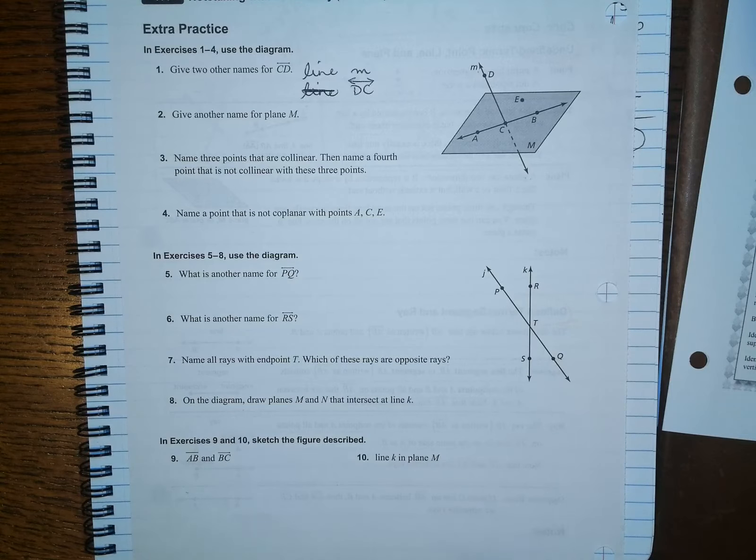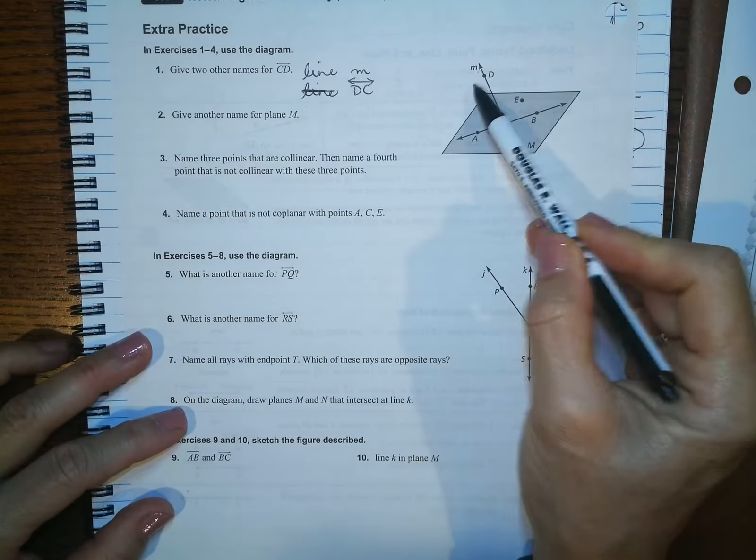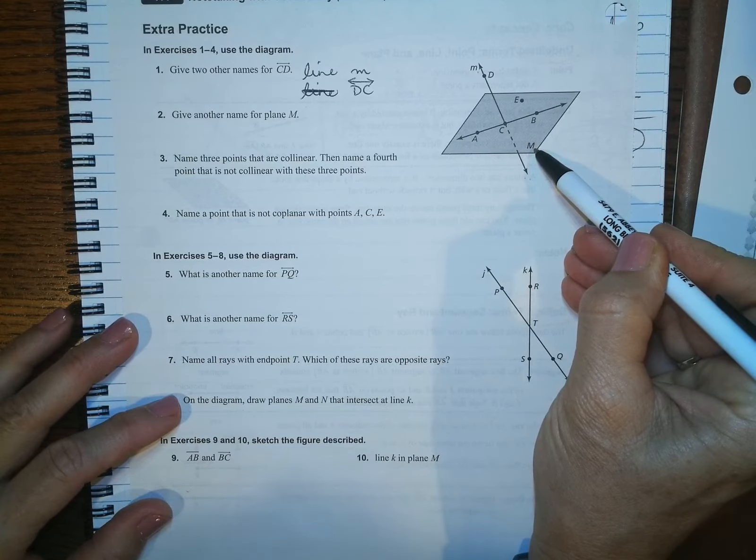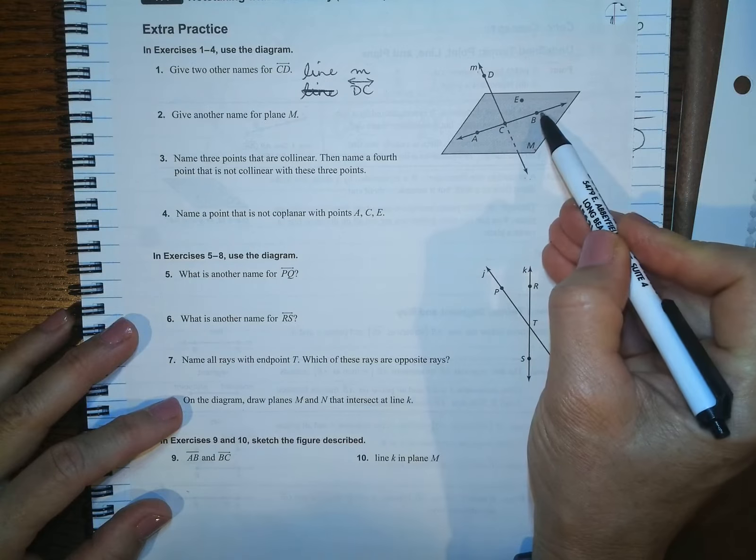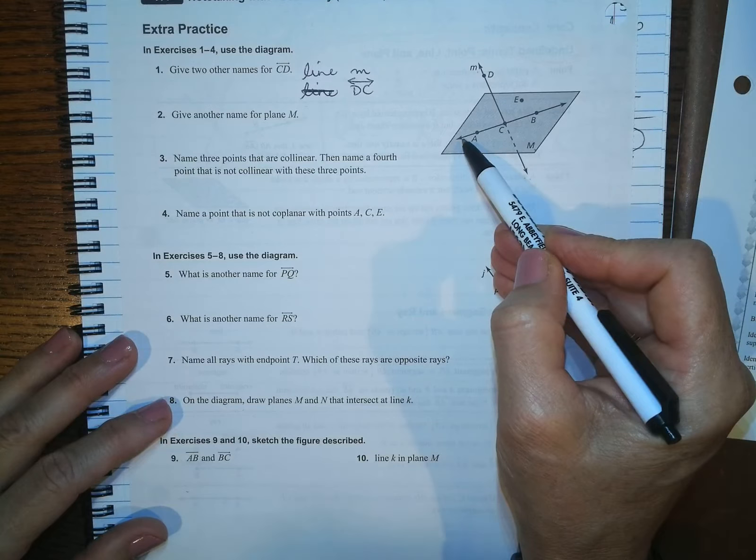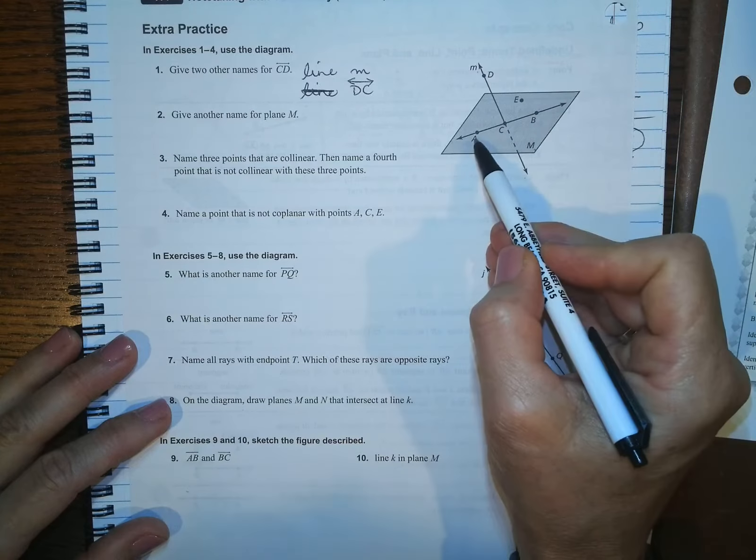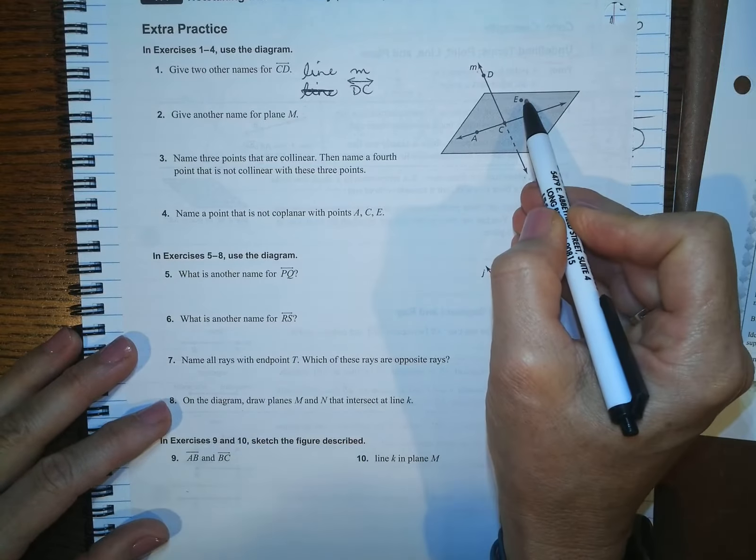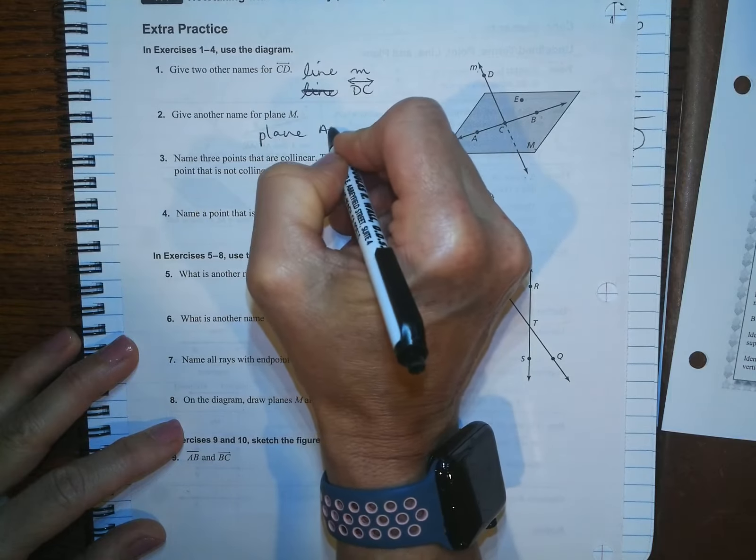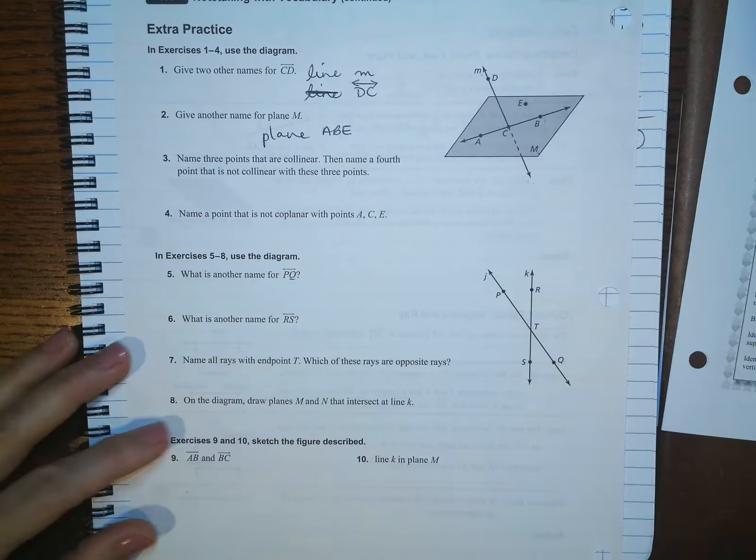Give another name for plane M. Okay. Plane M is the gray square. Here's plane M. So you have to name three points in the plane, A, B, and E. You could also do C, but it has to be non-collinear. So if A and B are on the same line, then you have to use E. So you could say plane A, B, E is another way to say that.